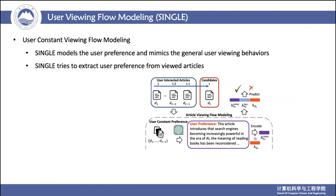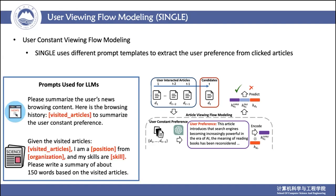Then, to model the user's constant viewing flow, we use the large language model to extract the user preference from user clicked articles. Such a mechanism aims to mimic the user's constant interest during viewing articles. For the task of recommending news articles and technology articles, we designed different prompt templates to extract user preference from clicked articles.